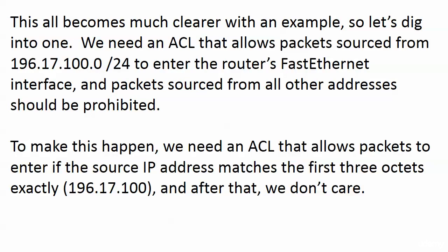Let's walk through an example. If you've seen ACLs and wildcard masks before, you can likely do this one in your head, but we're going to write it out anyway. We need an ACL that allows packets sourced from 196.17.100.0/24 to enter a router's FastEthernet interface; packets from all other addresses should be prohibited. This one is a little easier because it ends evenly — at the end of an octet.